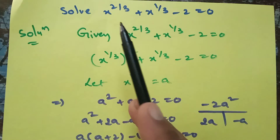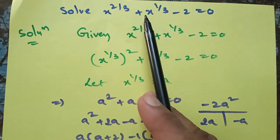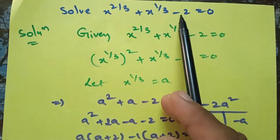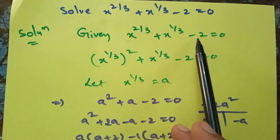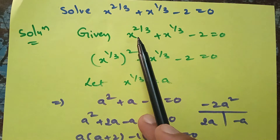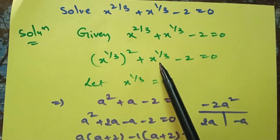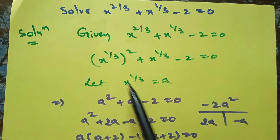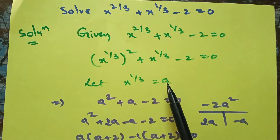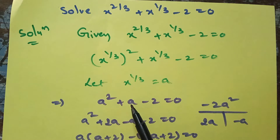The second question: solve x power (2/3) plus x power (1/3) minus 2 is equal to 0. Rewrite the first term as (x power 1/3) whole squared plus x power (1/3) minus 2 equals 0. Let x power (1/3) equal to a, then the equation becomes a squared plus a minus 2 equals 0.